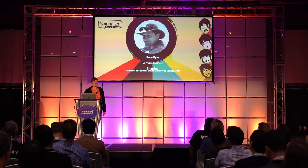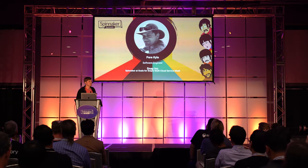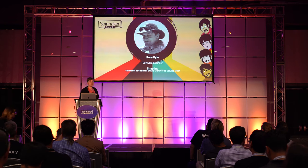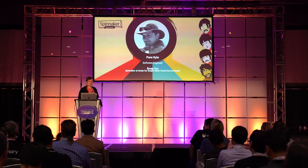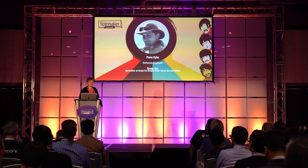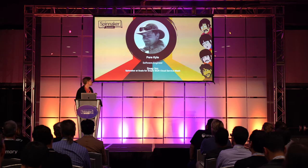My name is Perry. I'm a software engineer at Snap. I've been there for two years, primarily focusing on how we can deliver the Snapchat app and its core features to our users as fast as possible. Interestingly enough, when I got there, Snapchat was always continuously deployed — one of the advantages when you start from scratch with one big monolith, which is something we'll talk about how we're breaking apart today.